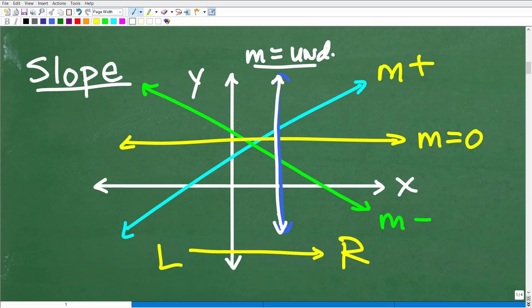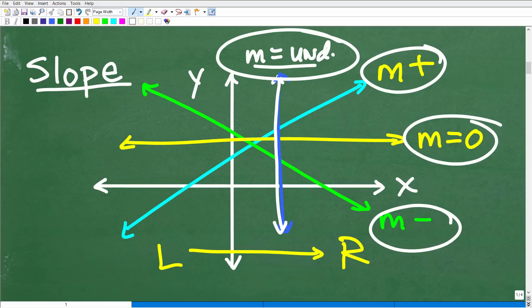if you remember these basic rules, okay, about slope, you will help yourself avoid making mistakes, okay? Again, lines that go from increase from left to right will always have a positive slope. Lines that are falling from left to right will always have a negative slope. Flat lines or horizontal lines will have a zero slope. And vertical lines have an undefined slope.